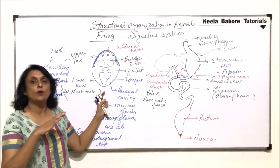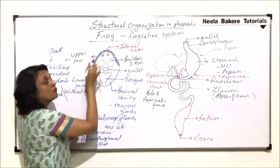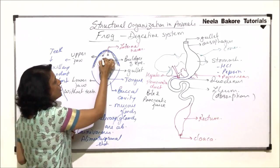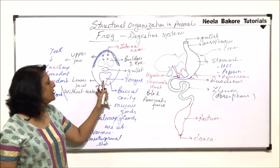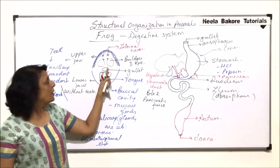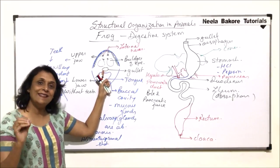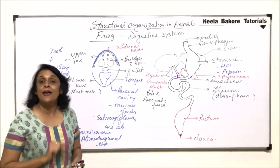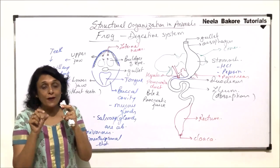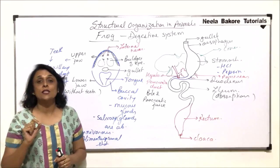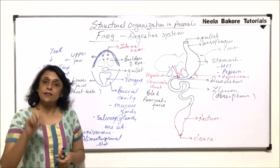There are also a few more teeth in the buccal cavity called vomerine teeth, found near the vomer bone in the upper part. The tongue and the maxillary teeth in the upper jaw are important features. The gullet leads into pharynx and then esophagus. Since frogs do not have a neck, the pharynx and esophagus are very small structures.